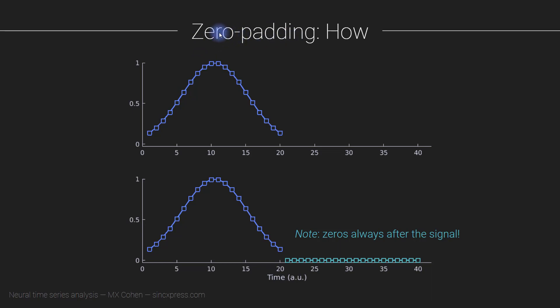As you might guess from the name, what we do in zero padding is pad the signal with zeros. Here is our original signal, it's just a little hill. What I've done here is zero pad, so I've added a bunch of zeros to the end of the signal. Here the signal is 20 points long, here the signal is 40 points long, so now it has twice as many points.